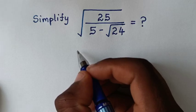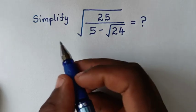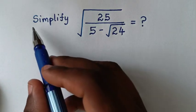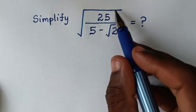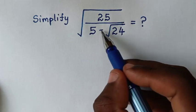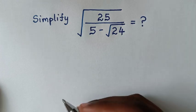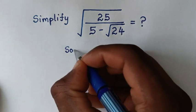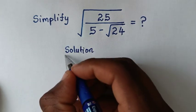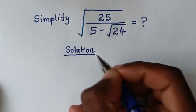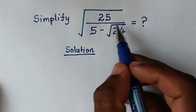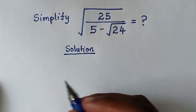Hello, you are welcome. We will solve this math problem by simplifying square root of 25 over (5 minus square root of 24). We will start by rationalizing this denominator.